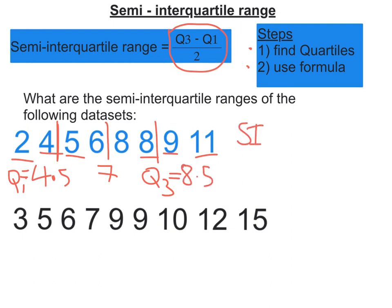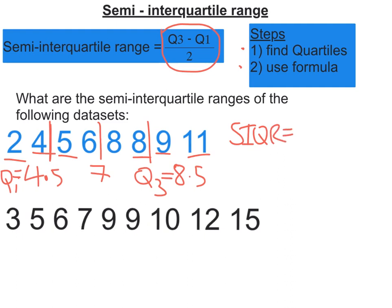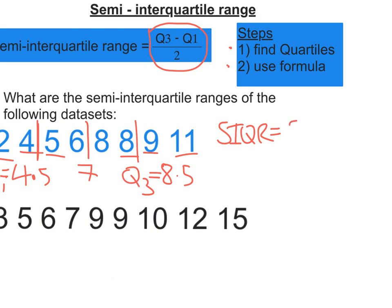Our semi-interquartile range, which I've shortened there, is going to be Q3 minus Q1 all over 2.